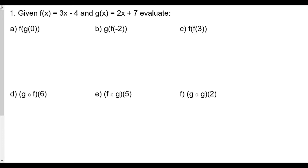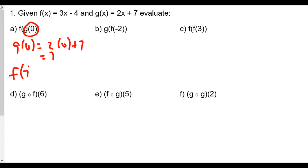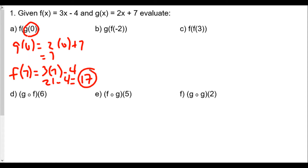Based upon our order of operations, we do whatever is in parenthesis first. So f of g of 0 means we're going to find g of 0 first. So g of 0 would be 2 times 0 plus 7, which is equal to 7. And so this value is going to be plugged into the function f. So now we get f of 7. We do one function, find its value, and then take the result and plug into the second function. So f of 7 is 3 times 7 minus 4, which is 21 minus 4, or 17. So f of g of 0 equals 17.